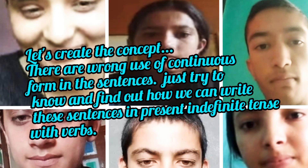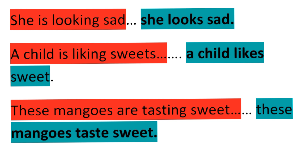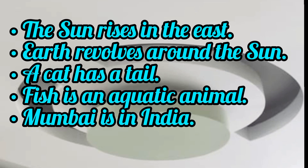Let me clear the concept with some examples. 'I am having a car.' — Do you think this is correct? No. 'I have a car.' is correct. 'I am thinking he is honest.' — Is it correct? No. 'I think he is honest.' 'She is looking sad.' — Wrong. 'She looks sad.' 'A child is liking sweets.' — Wrong. 'A child likes sweets.' 'These mangoes are tasting sweet.' — Wrong. 'These mangoes taste sweet.' You can see in these examples that we follow the verb and helping verbs according to the subject. That's it, dear student. That was something about present indefinite tense. I hope you understood.